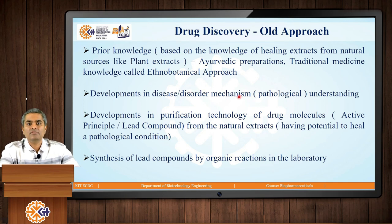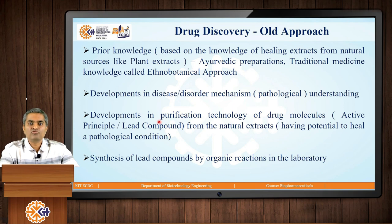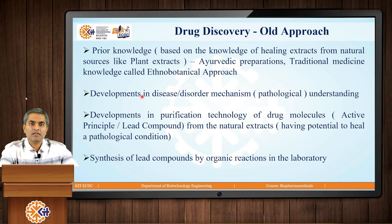Let us understand the first step in this process, which is called drug discovery. Drug discovery is nothing but discovering a molecule which will act as an active principle on a certain disease or disorder. The old approach of drug discovery involved prior knowledge from Ayurvedic preparations or traditional medicine. If we know that a particular extract from a plant heals a certain disease or disorder, then this approach could be called the ethno-botanical approach. There were also developments in disease or disorder mechanism understanding due to developments in cell biology, physiology, and anatomy studies.